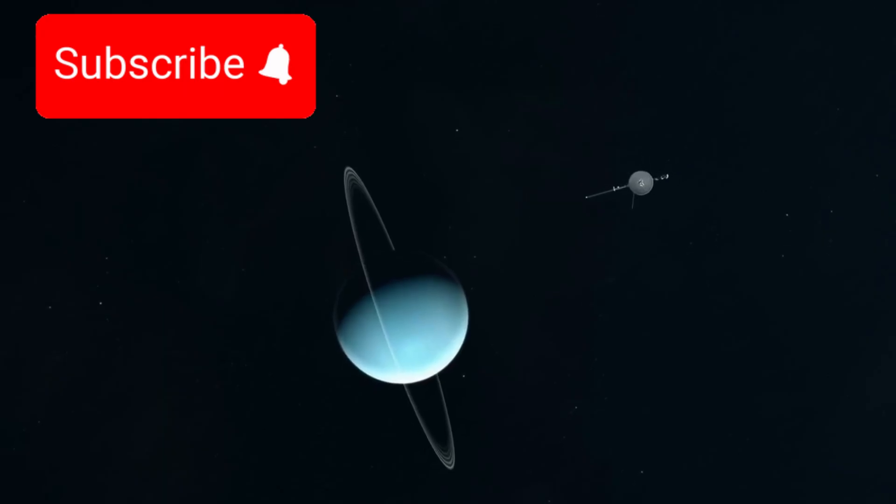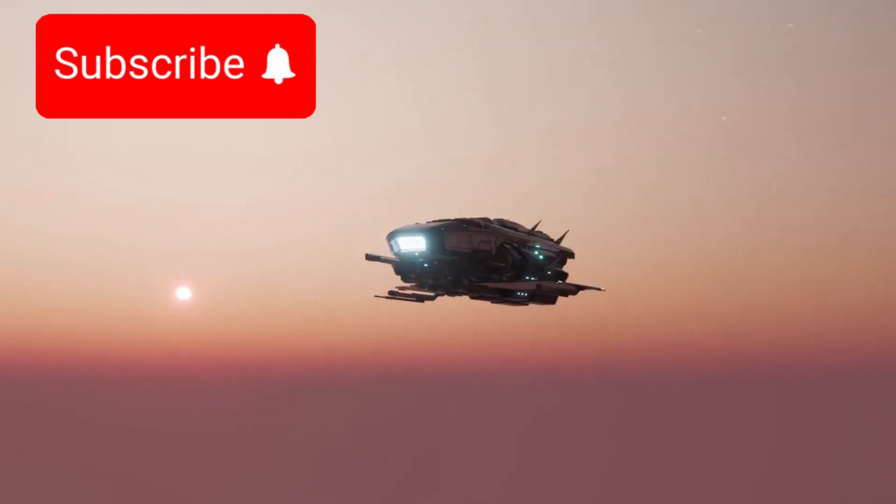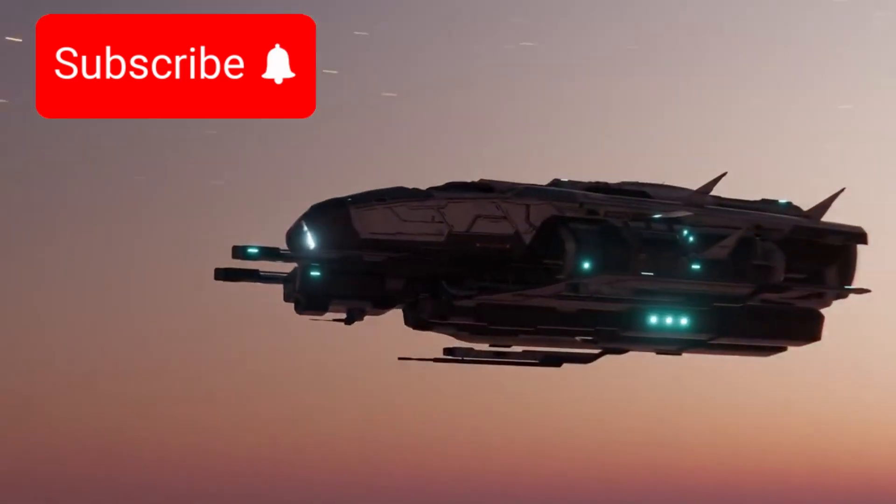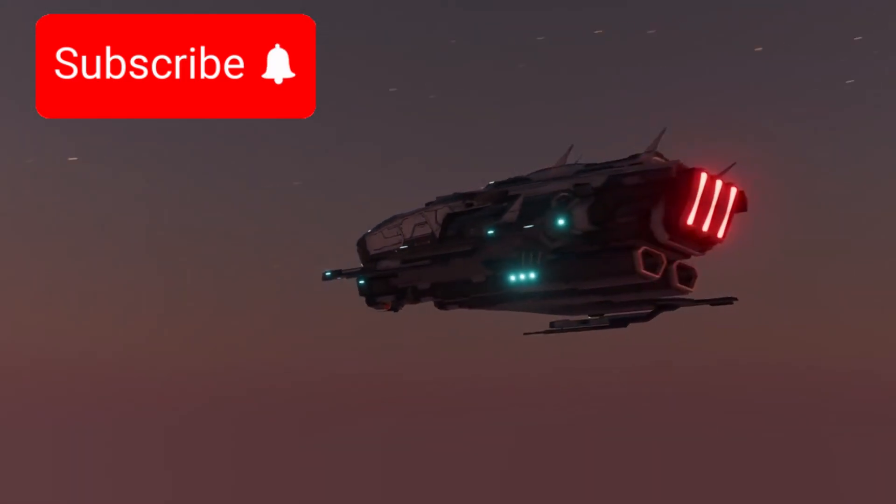Voyager 2 launched first in August 1977, followed by Voyager 1 in September. Despite launching later, Voyager 1 took a faster path and quickly overtook its twin.